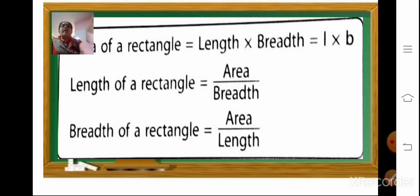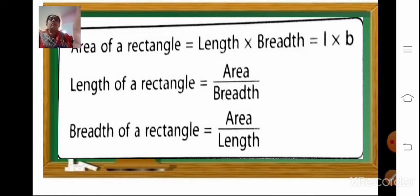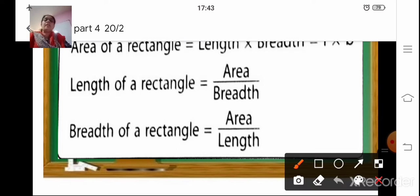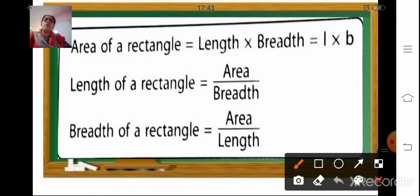Now to find the area of a rectangle, we will multiply the length into breadth. Whereas to find the perimeter of a rectangle it is 2 into length plus breadth, and to find the area of a rectangle it is length into breadth.